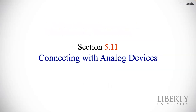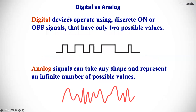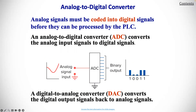Let's talk about connecting with analog devices — analog versus digital. Digital devices operate on discrete on or off signals that have only two possible values, either on or off, one or zero. Analog signals can take any shape and represent an infinite number of possible values, where every value on the curve is something that would be valid and needs to be accounted for.